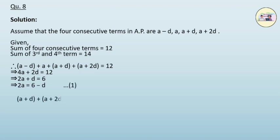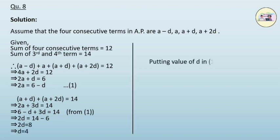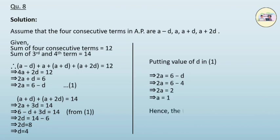According to the next given condition, (a+d) + (a+2d) = 14, therefore 2a + 3d = 14. Substituting from equation 1: (6 − d) + 3d = 14. On further solving, we get d = 4. Putting d = 4 back into equation 1: 2a = 6 − 4 = 2, giving a = 1. Hence, the terms are −3, 1, 5, and 9.